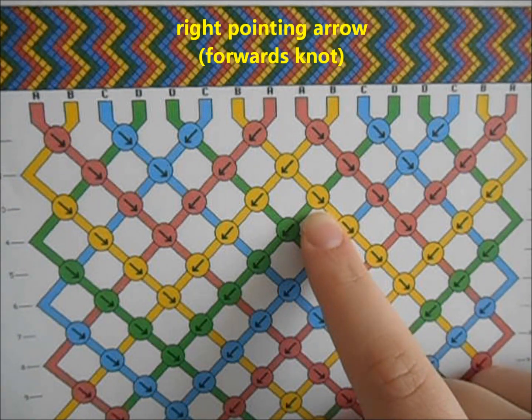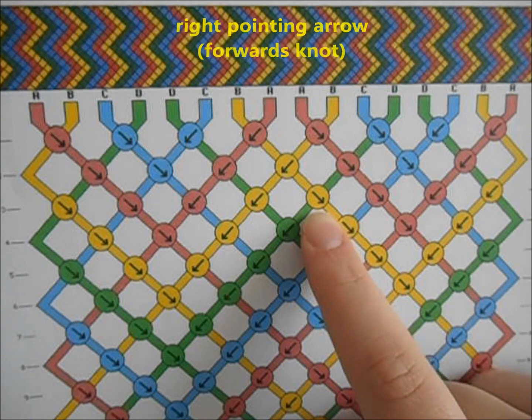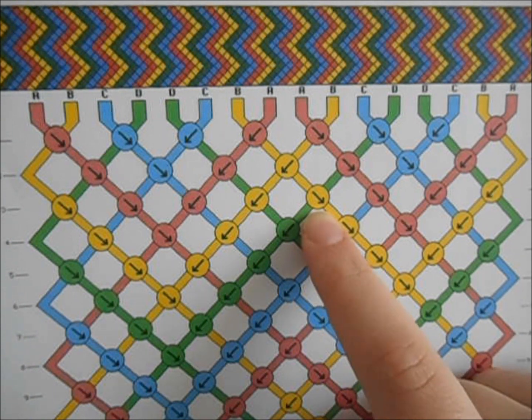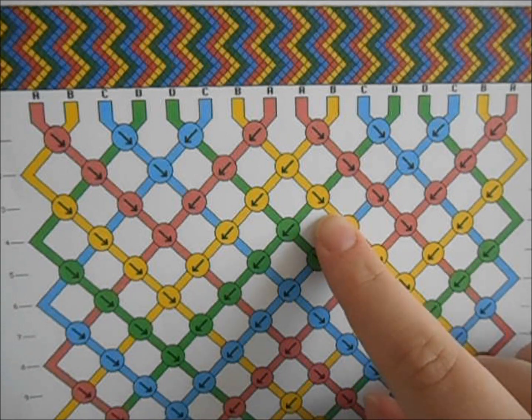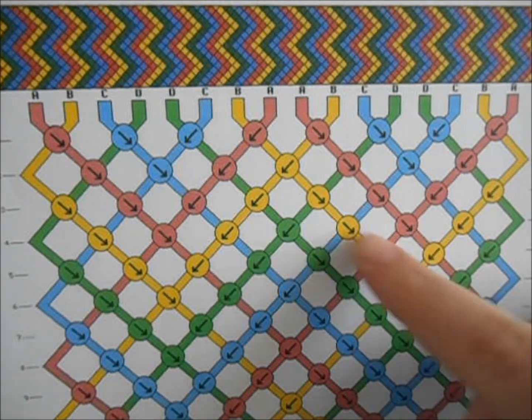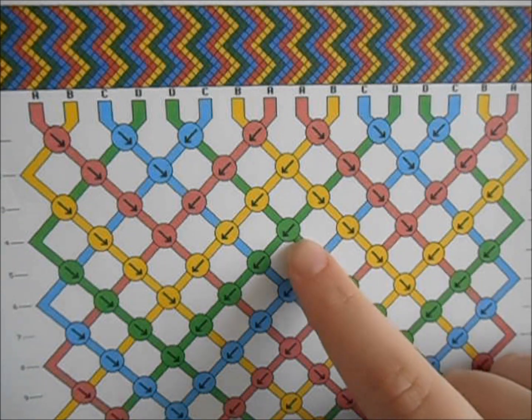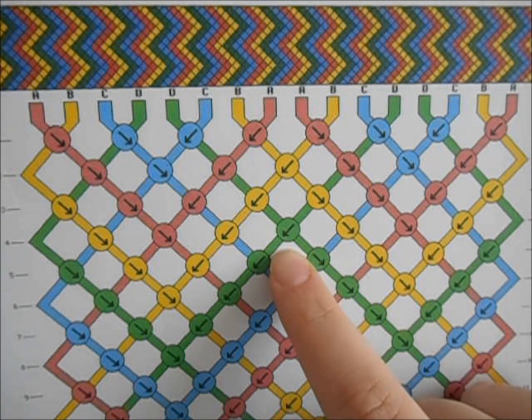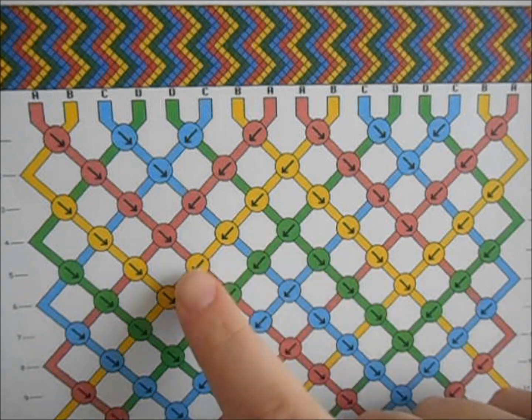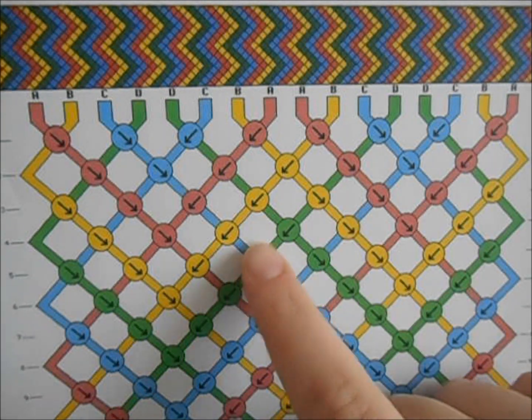It gives you the sense of where your main strand will be going. The arrow that goes to the right is your forward knot, which goes over to the right. The arrow that goes to the left is a backwards knot because it goes over to the left.